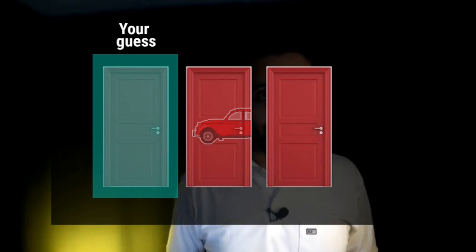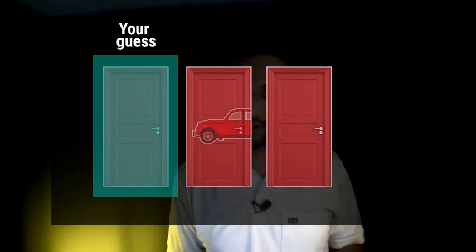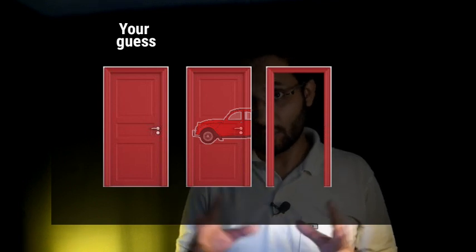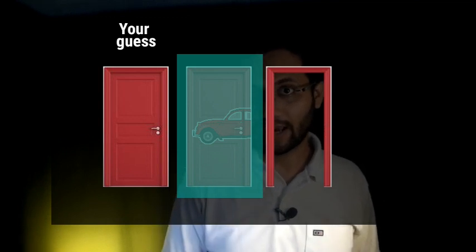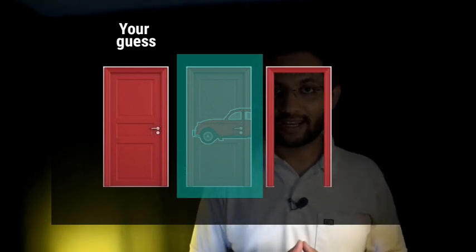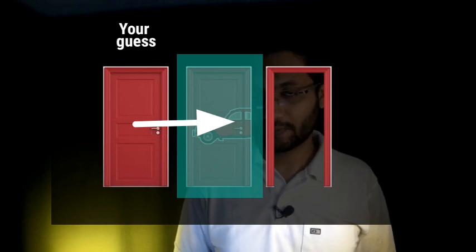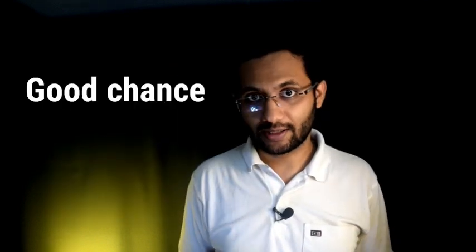Now Monty will come and will open another door with no car behind. So now there is a good chance that the other door which is closed has a car behind. Now you have an opportunity to change your mind, and now if you do and you switch, there is a good chance that you will win. I'm using the word "good chance" because it's not a rule. This will not work if your initial guess is right. It's a game of chance, so switching will increase your winning probability.